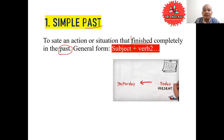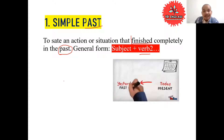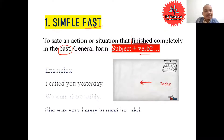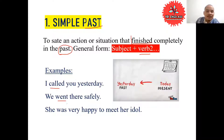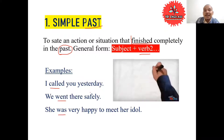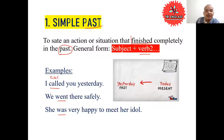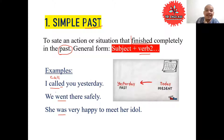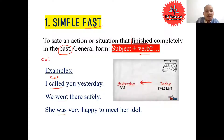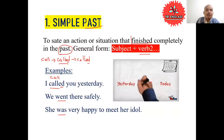The general form uses verb 2. You can see in the picture: yesterday is past, today is present. For example: 'I called you yesterday.' The base form of the verb 'call' is 'call,' but when I use it in past tense, I add ED — so 'called.' We have to add ED to make verb 2. Both verb 2 and verb 3 of 'call' are 'called.'